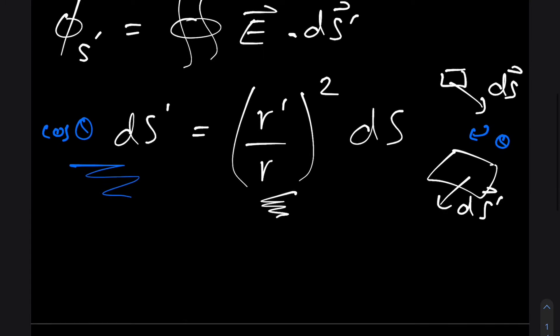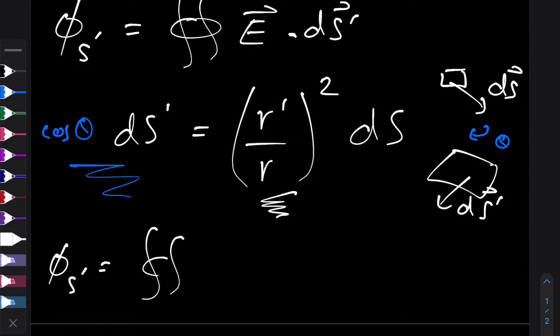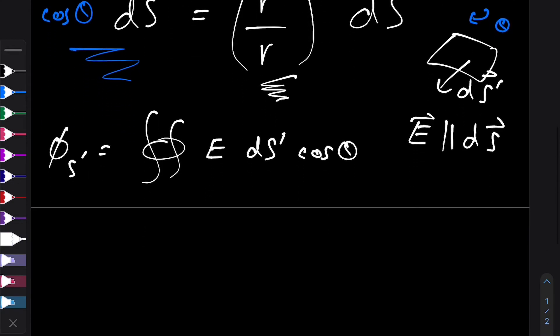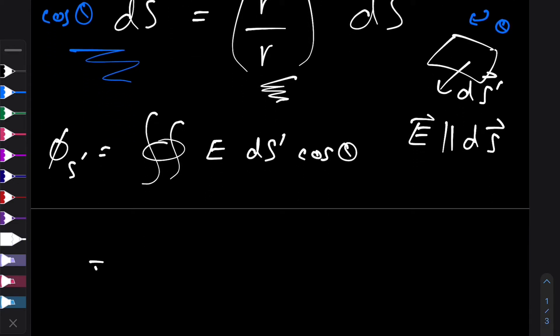So using that, we can see that our flux φ s dash is now equal to the loop integral of, so a dot product can be written as the magnitude of E times the magnitude of ds times cos of the angle between them, which is also θ because E is parallel to ds. Oh, this is meant to be ds dash, and this, well, we know that, we know what this is from this side of the equation, and we know what this is from Coulomb's law. So let's plug both of that in. We get,